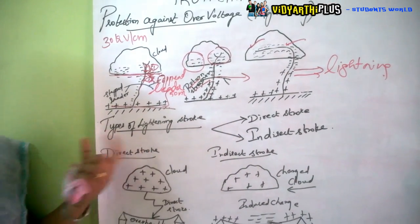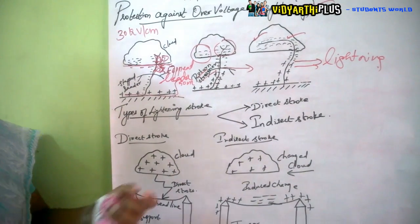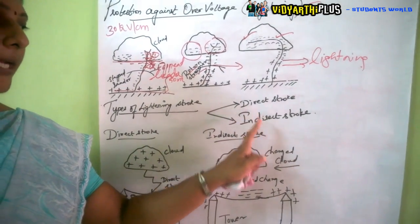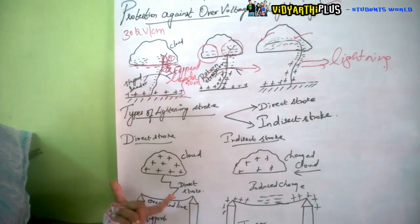There are two types of lightning strokes: the direct stroke and the indirect stroke.